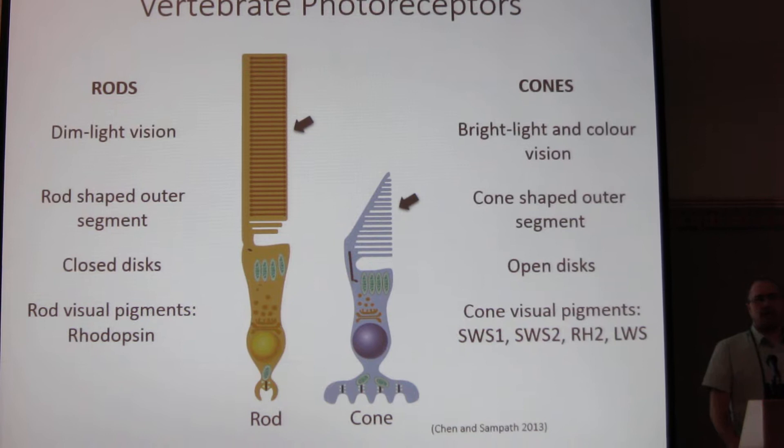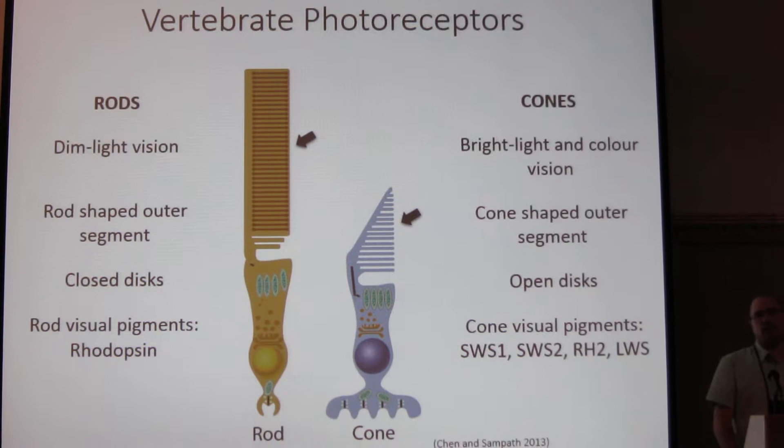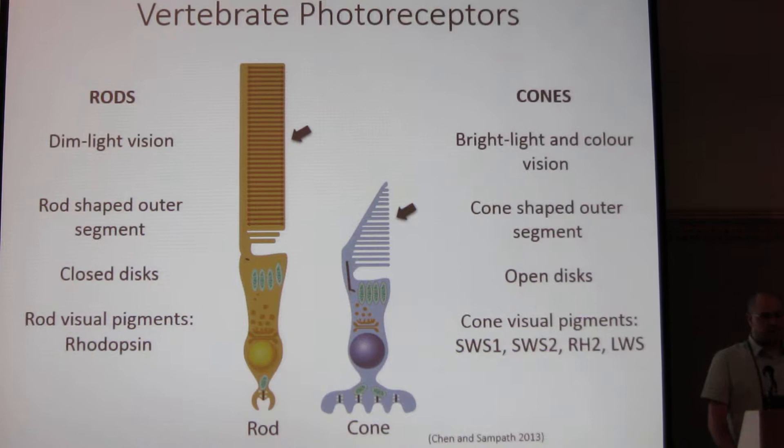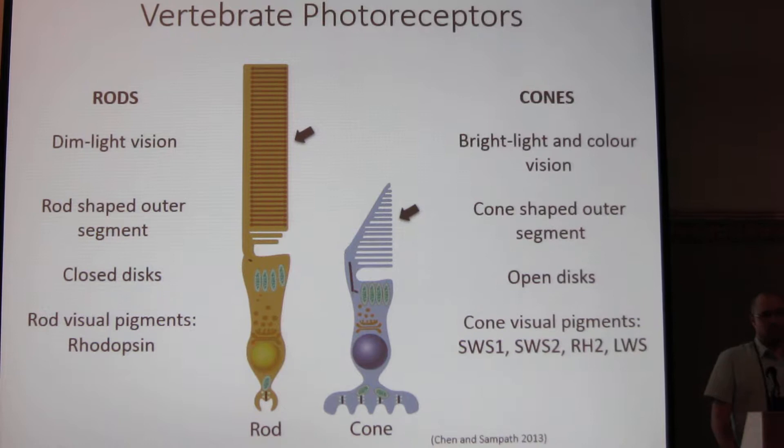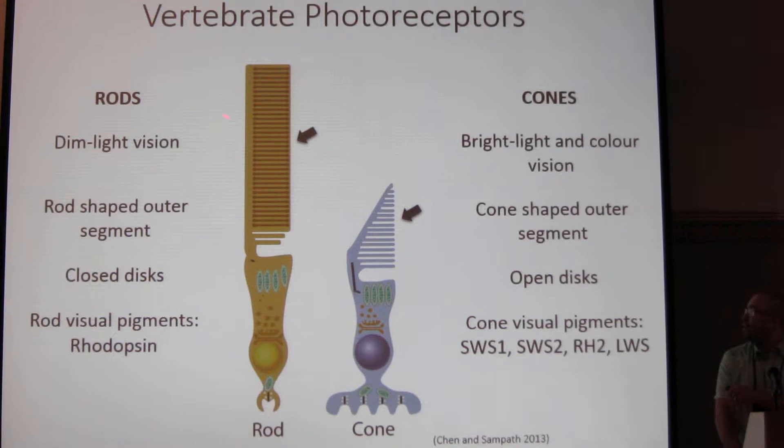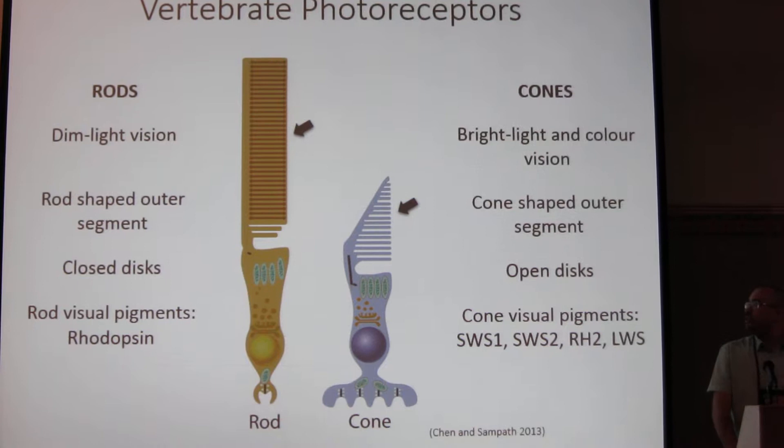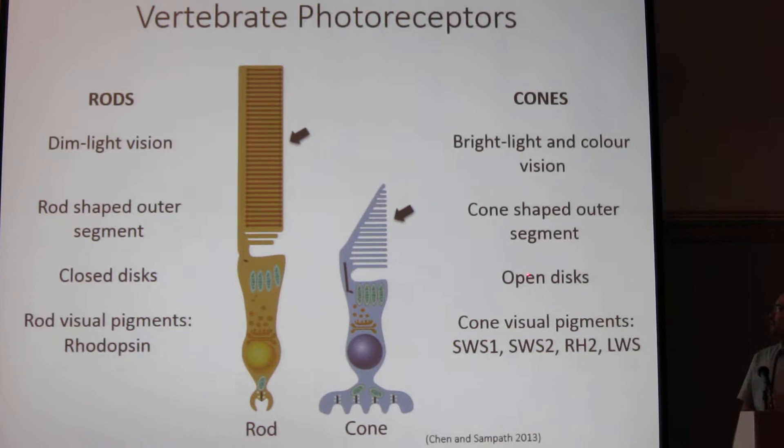In most vertebrates this is very highly conserved, and a duplex retina contains both rods and cones, which enables vertebrates to see in a variety of light conditions, from very dim light up to very bright light. There are different morphological and physiological aspects of rods and cones that allow this, mainly the rod-shaped outer segment in rods, with closed discs enclosing light-sensitive visual pigments and other phototransduction proteins. In cones we have a much smaller outer segment with open discs containing cone visual pigments.